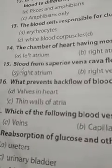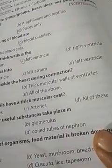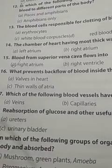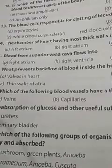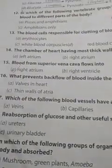Question number 16: what prevents backflow of blood inside the heart during contraction? The options are thick muscular wall of ventricles, valves in the heart, and thin wall of atria. The answer is valves in the heart — they prevent backflow of blood during contraction.